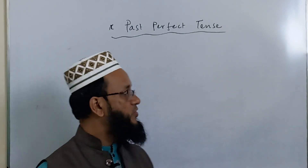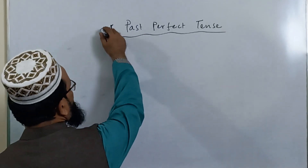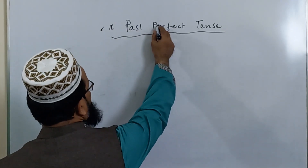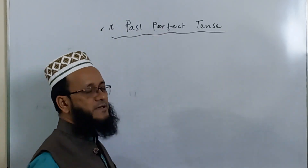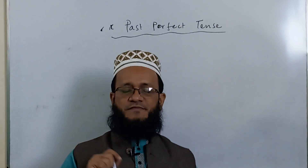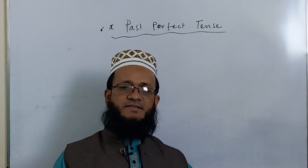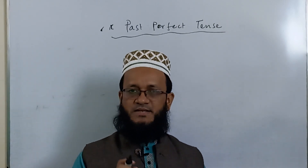Past perfect tense. The first thing is past perfect tense. Past perfect tense indicates a past incident — an action that was completed before another past action.